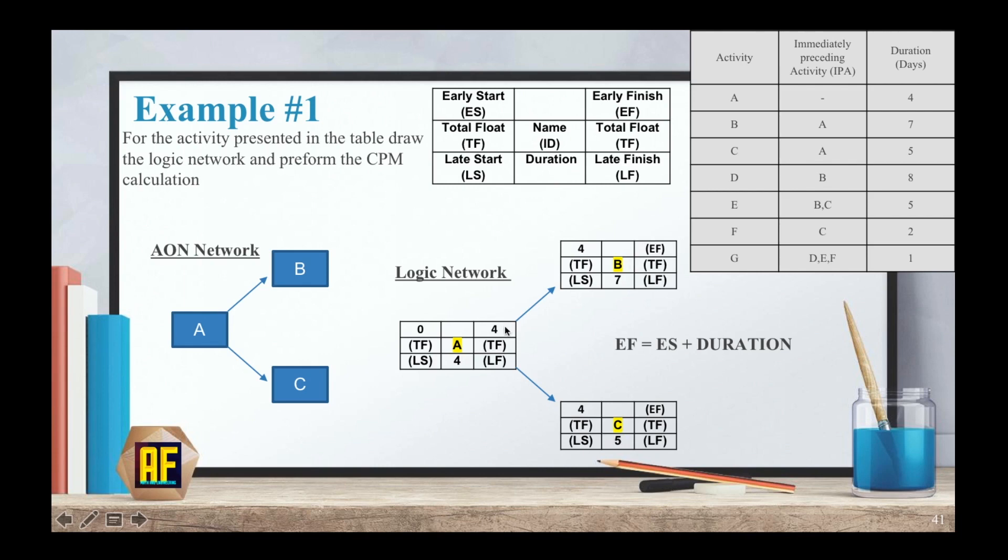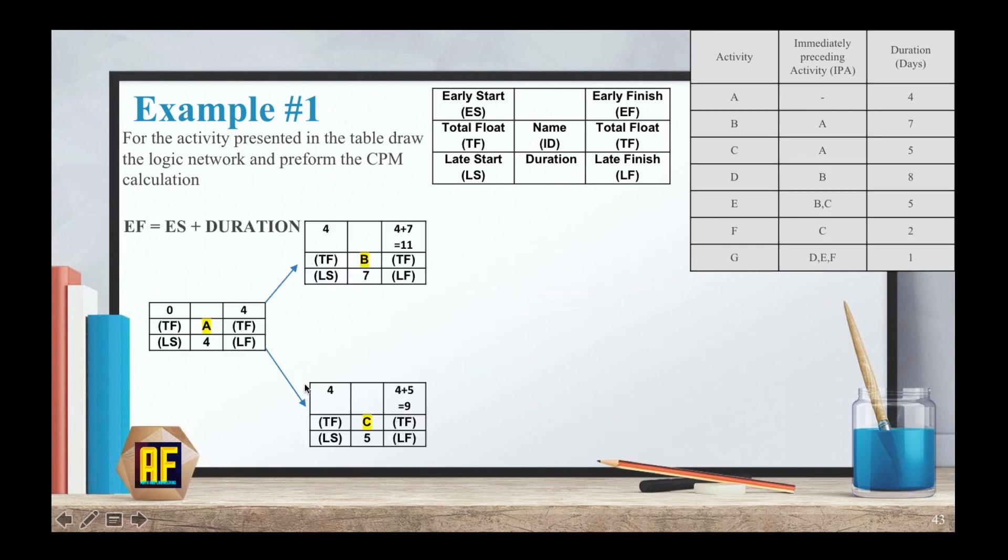Now we can connect this activity to B and C. And if our early finish is after four days, which means that activity B and C can only start, the early start can only be after four days as well. So for my ES, I'm going to write four here. And for my duration, I'm going to write seven and five. Now, what's my EF for B, four plus seven equals 11. And what's my EF for C, four plus five equals nine.